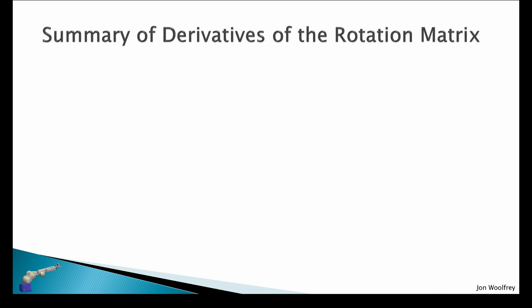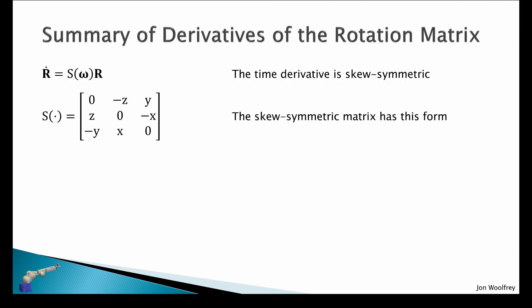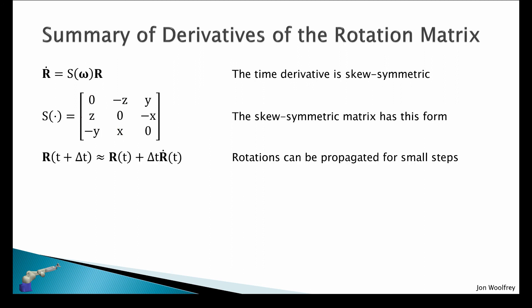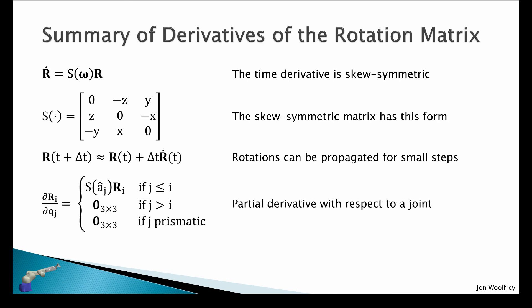To summarize the derivatives of the rotation matrix: the time derivative is skew symmetric, given by R_dot equals skew(omega) times R. The skew symmetric matrix has zeros across the diagonal and the x, y, and z elements on the off-diagonals. Rotations can be propagated but only for very small time steps. The partial derivative is conditional, with three different cases depending on the joint's position in the kinematic chain and joint type.